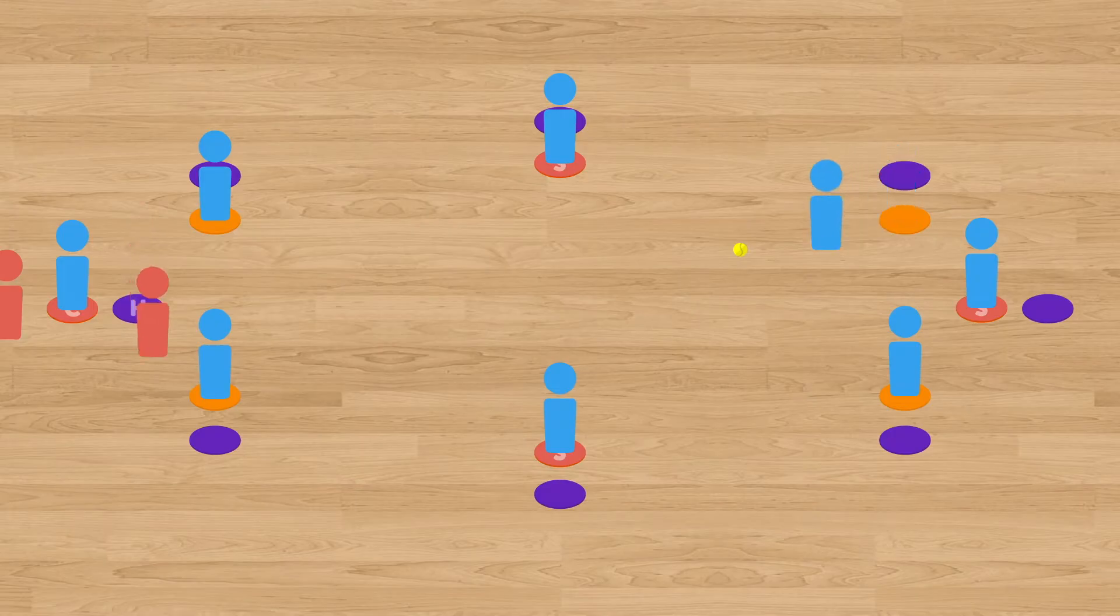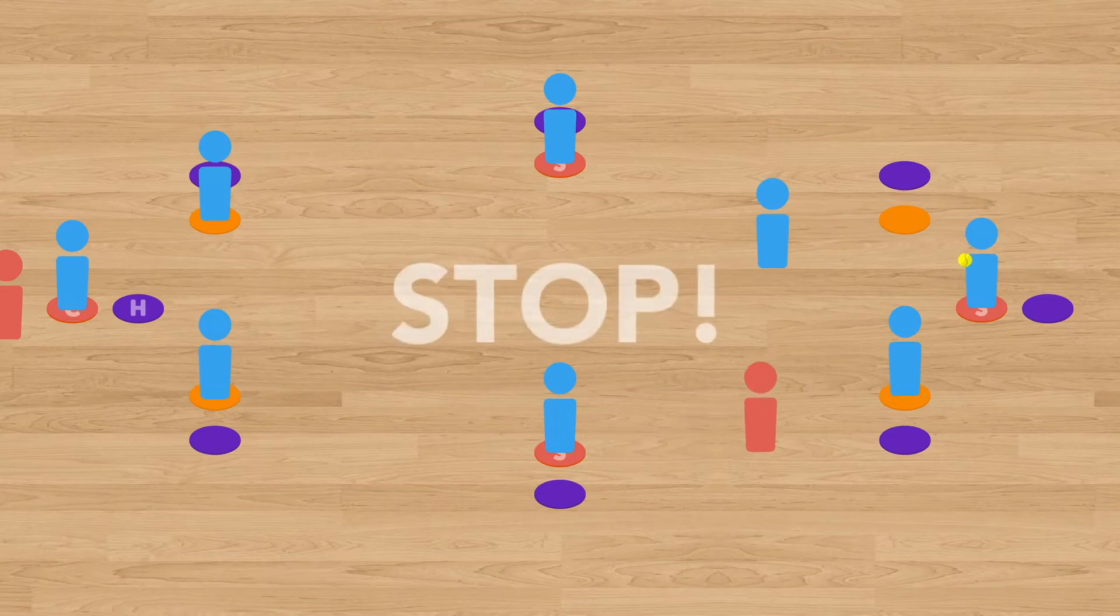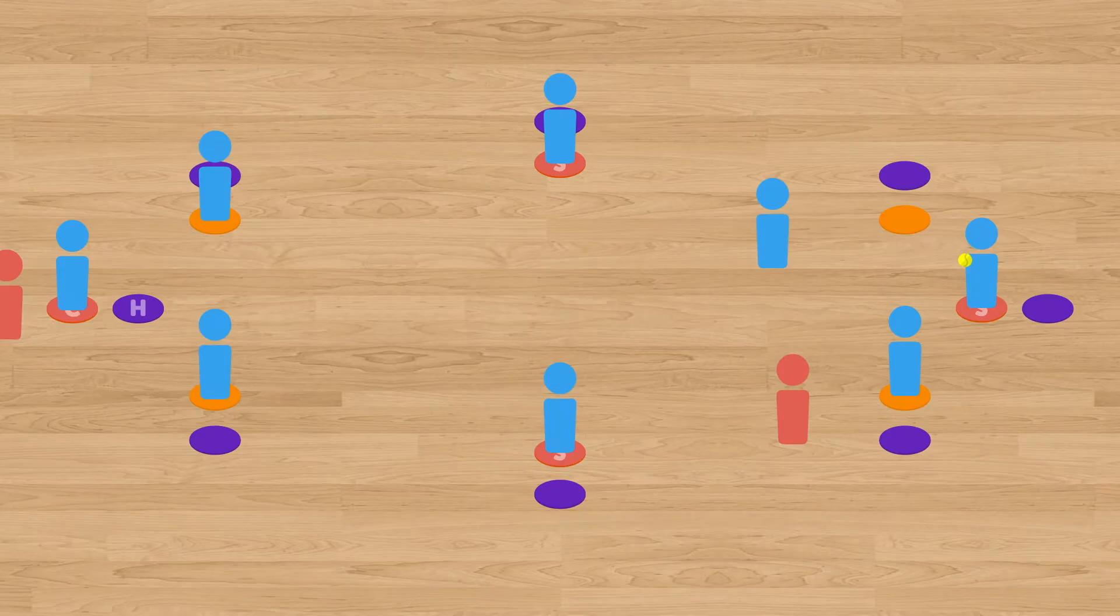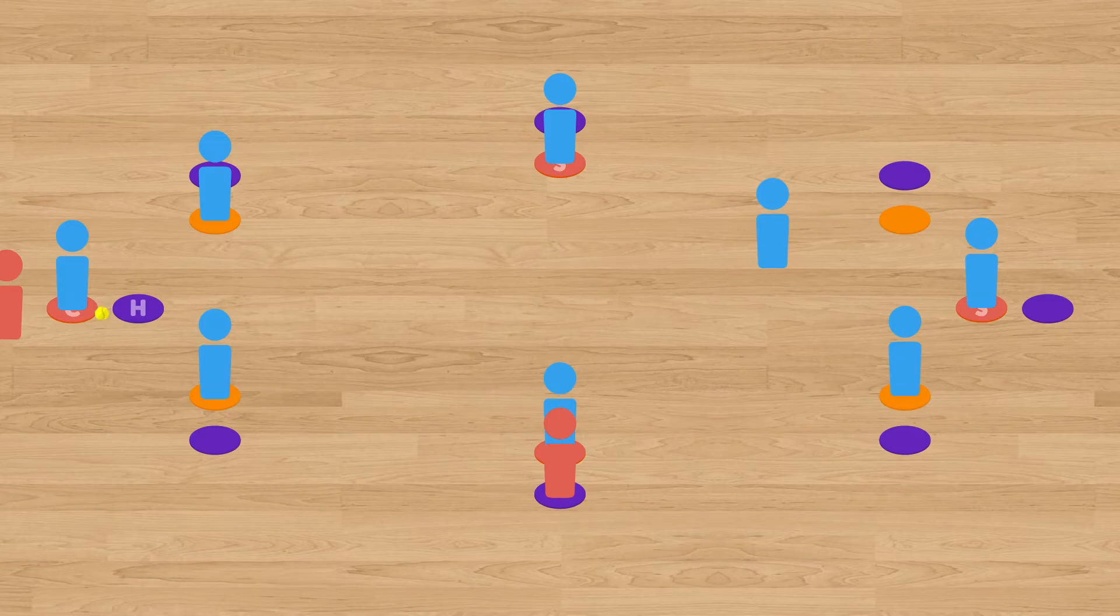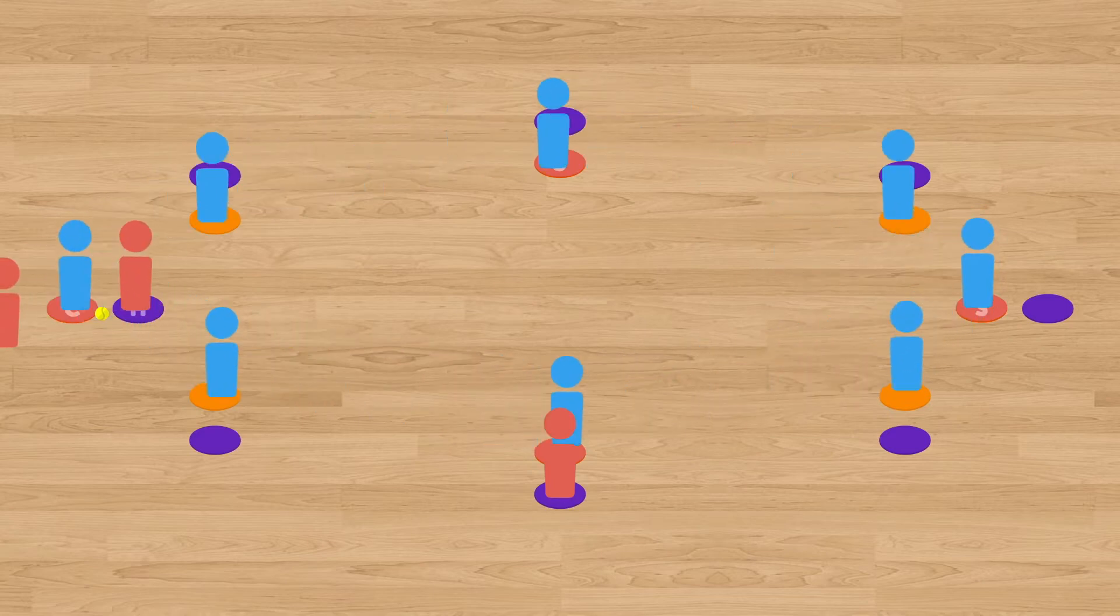The fielding team will try to stop them by fielding the ball to a player who is standing at a stop spot. Once the fielding team manages to get the ball to a stop spot, the batting team player returns to the last base they touched before stop was called. In between each turn at bat, the fielding team must rotate in clockwise fashion, so that each player gets to have an experience at a stop spot.